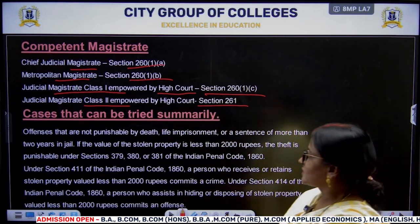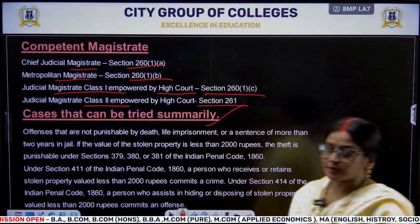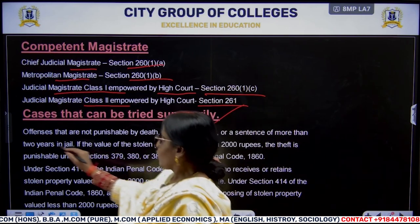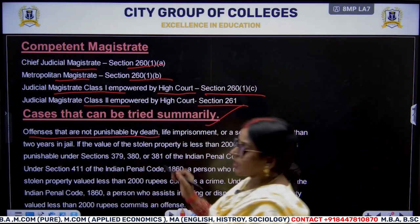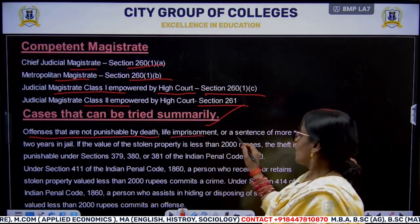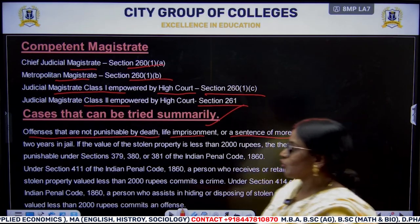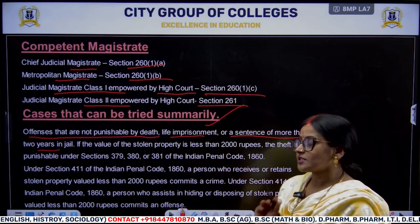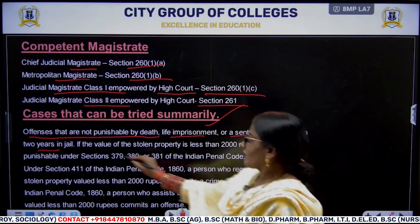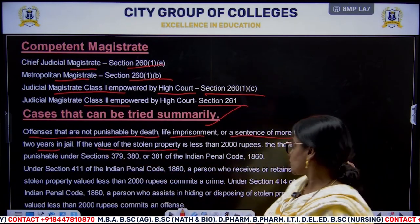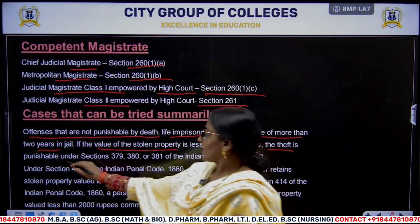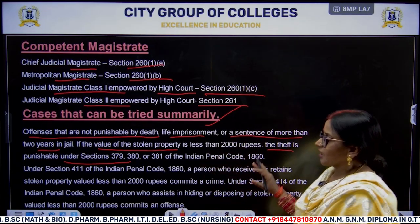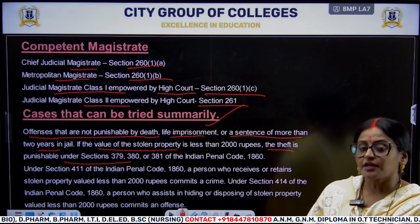Cases that can be tried summarily — that is, which offences should be tried here. Offences that are not punishable by death, life imprisonment, or a sentence of more than 2 years in jail can be tried in summary trial. Even theft where the value of the stolen property is less than 2000 rupees, punishable under Sections 379, 383, and 381 of the IPC, these are offences which can be tried as a summary trial.